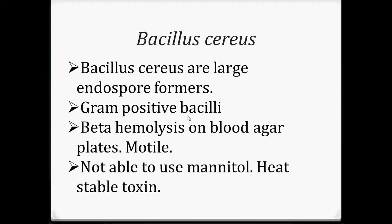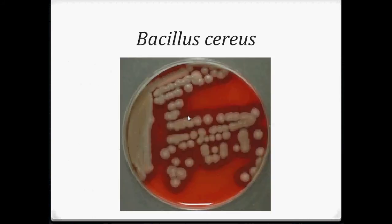Bacillus cereus are large endospore formers and gram-positive bacilli. They cause beta hemolysis, which is the complete hemolysis on blood agar plates. They are motile, unlike Bacillus anthracis. They cannot use mannitol and they produce a heat-stable toxin.